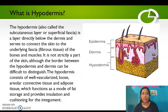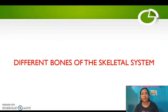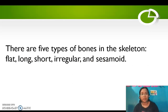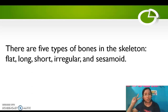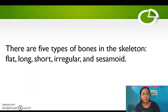That's all the layers of the human skin. Now let's move on to the different bones of the skeletal system. There are five types of bones in the skeleton: flat, long, short, irregular, and sesamoid.